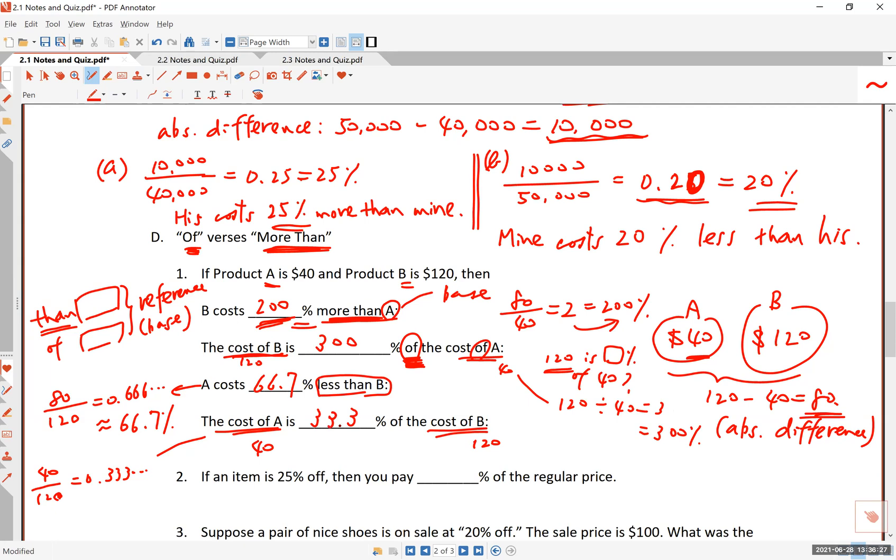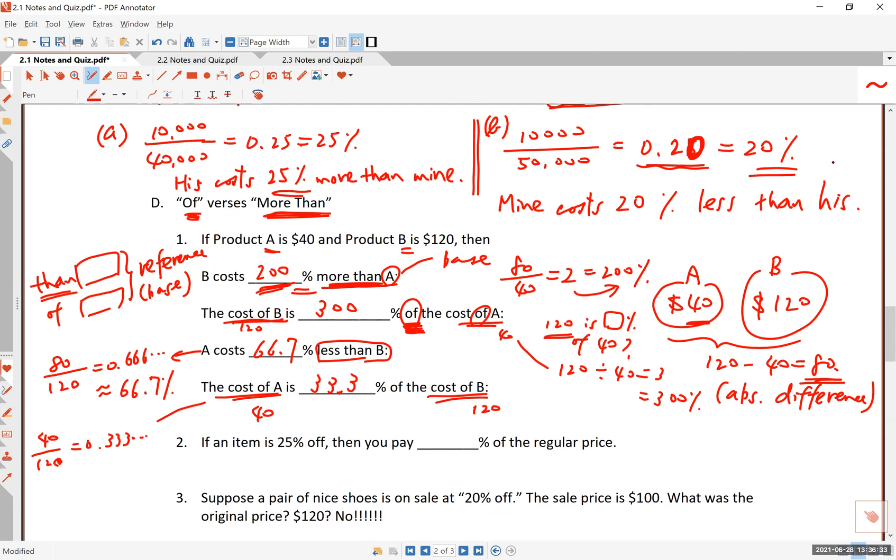As confusing, we'll get slightly more confusing when we talk about decimal percentages in the next section, but these are the four different ways. Here is one, here is two, here is three, here are four different ways to compare two things, and each of these has different numbers, but each of these is actually correct. B costs 200% more than A, and the cost of B is 300% of the cost of A. A costs 66.7% less than B, while the cost of A is 33.3% of the cost of B. Each one of these statements happens to be correct.